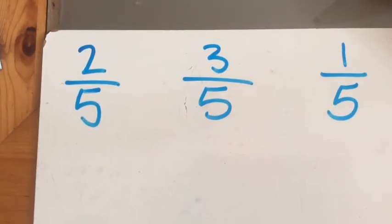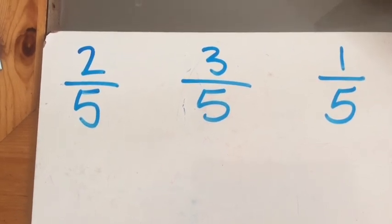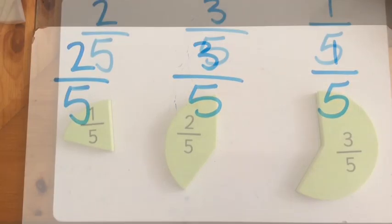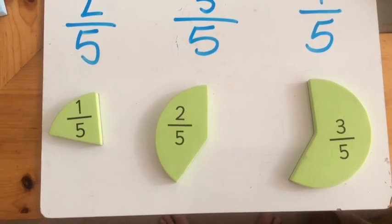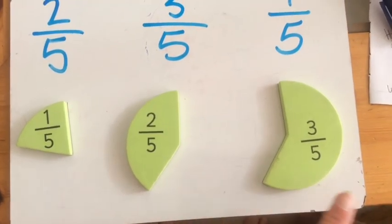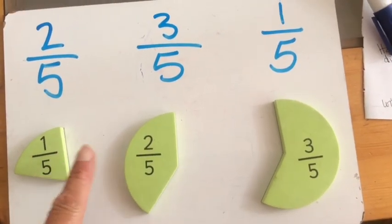Now can you order these from smallest to largest? Think what the fractions mean. One fifth, two fifths, three fifths. Quite easy because they're all fifths. You've just got to put the top number in order.